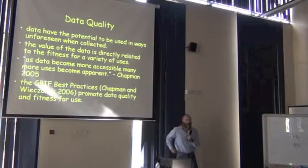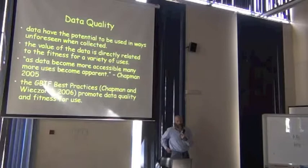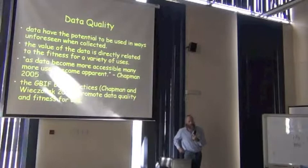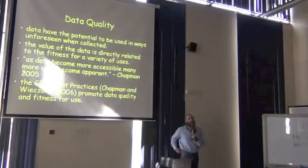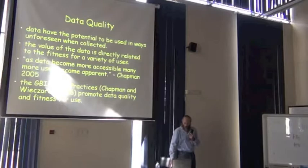The value of the data is directly related to how well it can be used in the future — how many different kinds of uses it can be put to. In that sense, what we want to achieve as data capturers and data publishers is to be as complete as possible, and to be as clear as possible about what the data contain. It has become apparent as data become published that people will use them in new and interesting ways, and we can give plenty of examples about how data get misused because people don't understand what those data actually mean.